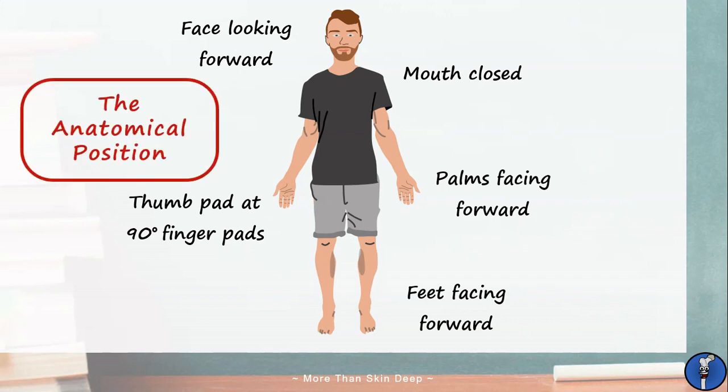The anatomical position is how we need to think of all of our anatomy from now on. Whether we're talking about the chambers of the heart, the limbs, or the inner workings of the brain, we need to always imagine our subjects standing like Greg. This allows us to describe how structures are related without first having to define their orientation in space.